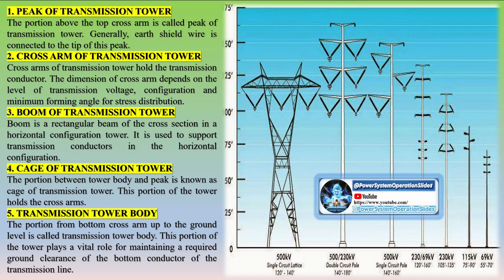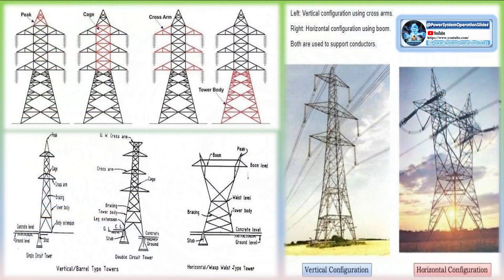Angle towers, sometimes called semi-anchor towers, must resist transverse loads induced at an angle in addition to the usual wind, ice, and broken conductor loads. Angle towers are heavier than suspension towers by necessity. Angle towers are used when the line deviation exceeds an angle greater than 2 degrees, and they are classified as: small angle towers (2–10 degrees line deviation), medium angle towers (10–30 degrees line deviation), and large angle towers (30–60 degrees line deviation).